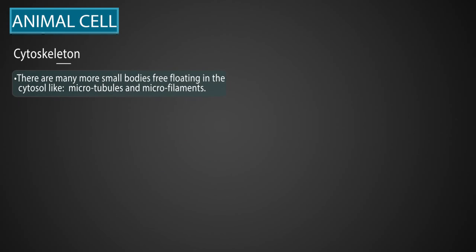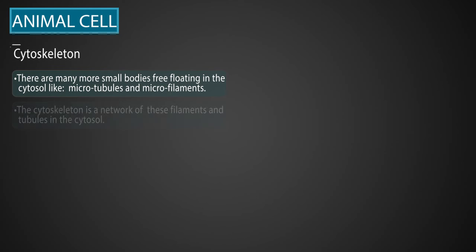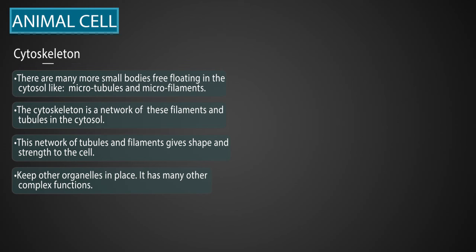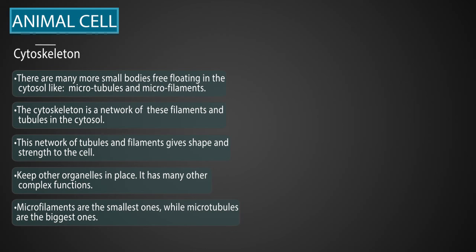Cytoskeleton: There are many small bodies free-floating in the cytoplasm, like microtubules and microfilaments. The cytoskeleton is a network of these filaments and tubules in the cytosol. This network gives shape and strength to the cell and keeps other organelles in place. It has many other complex functions too. Microfilaments are the smallest ones, while microtubules are the biggest ones.